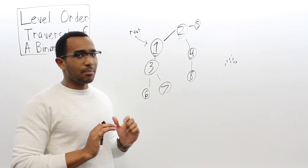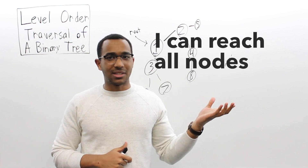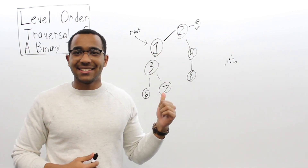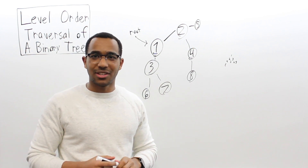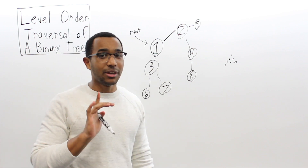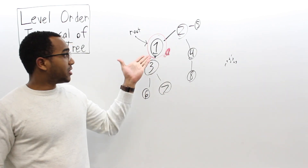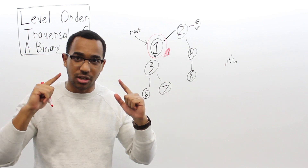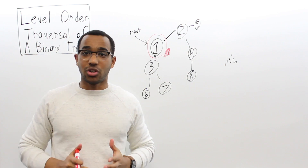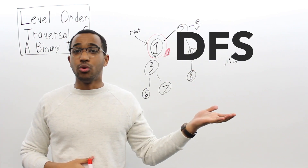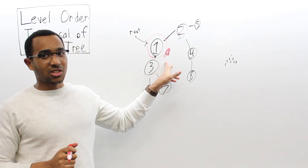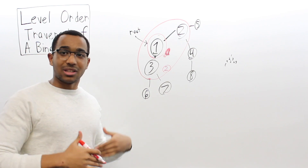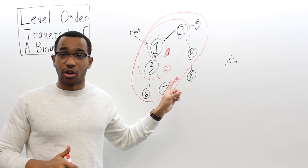What does that mean? Acyclic means no cycles, and connected means all of our nodes are connected with no disjoint segments — it's all together in one piece. Is this different from what I showed you before? It's actually not different. Let me show you the levels of this tree. Here is level one — this is our root, the first level. Here is level two. And here is level three — do you see how this is the third level out?